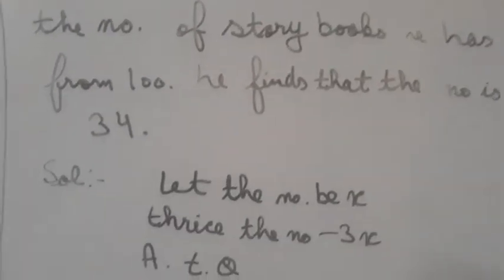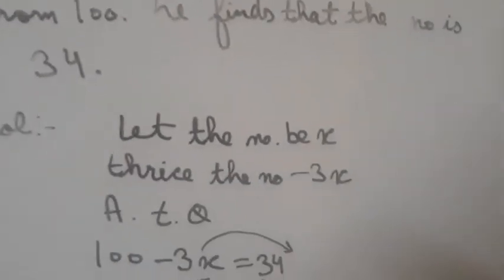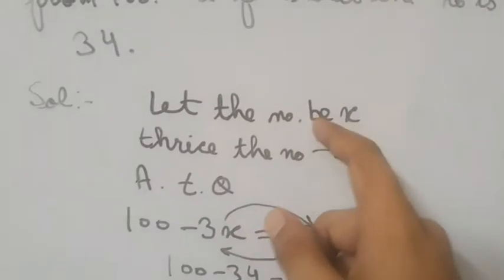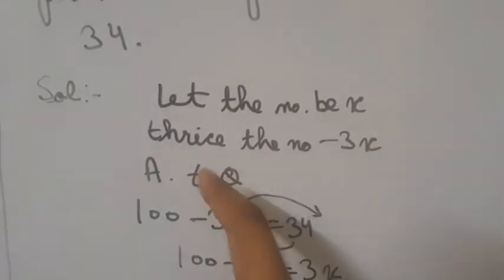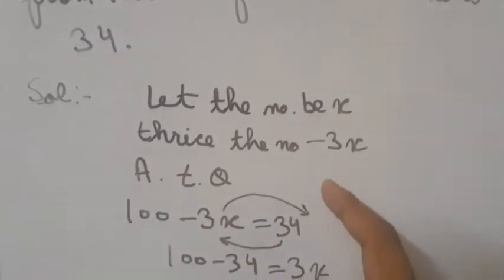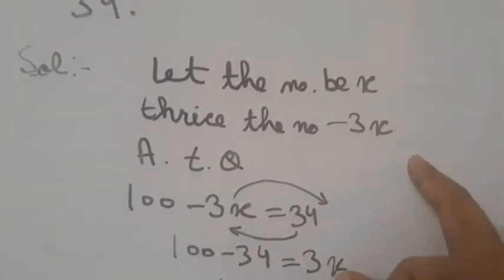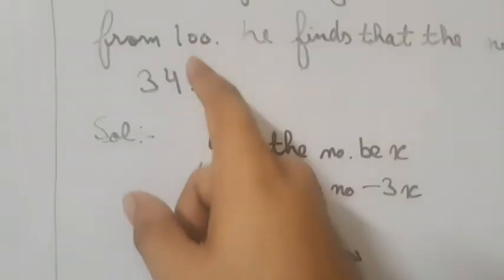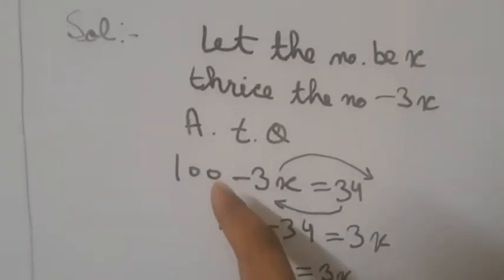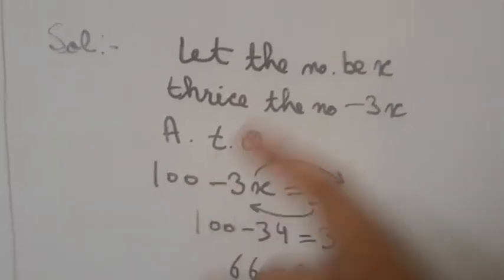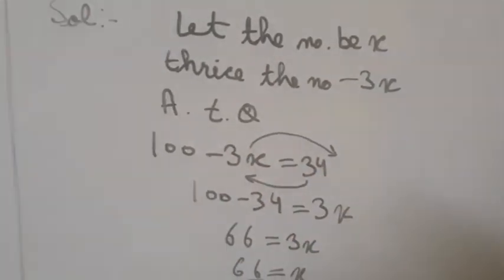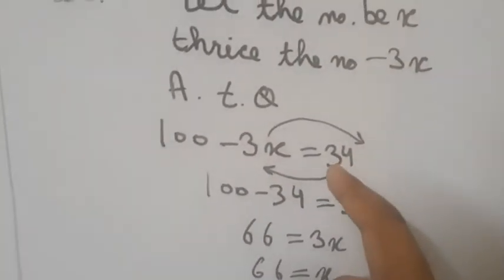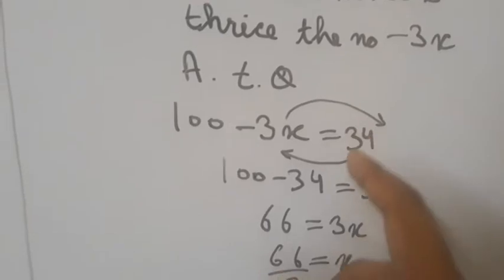Let the number be x. Thrice the number is 3x. According to the question, we subtract from 100, so 100 comes first — giving us 100 minus 3x = 34.